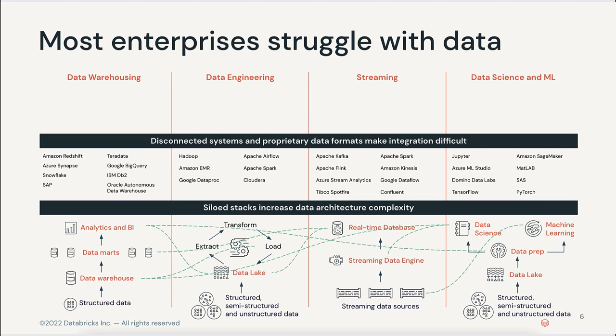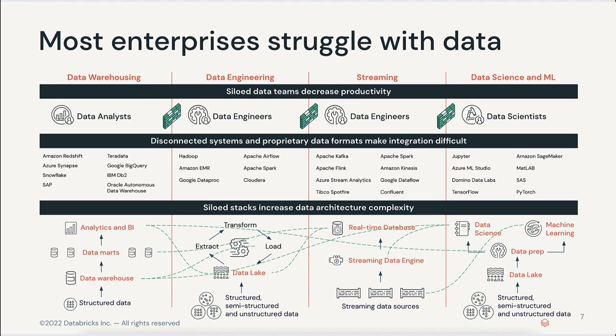If you want to enable advanced use cases, you have to move the data across stacks — from the data warehouse and streaming systems into a data science and machine learning stack. It ends up being expensive and resource-intensive to manage. All of this complexity is felt by your data teams. Because the systems are siloed, the teams become siloed too.